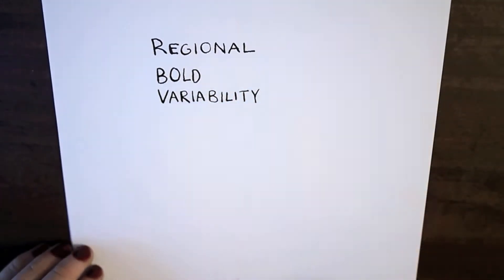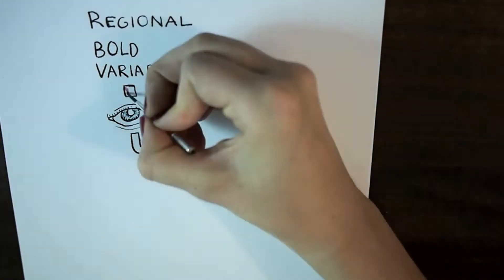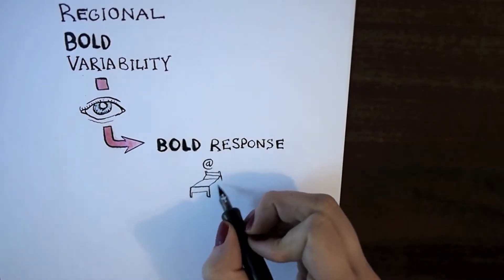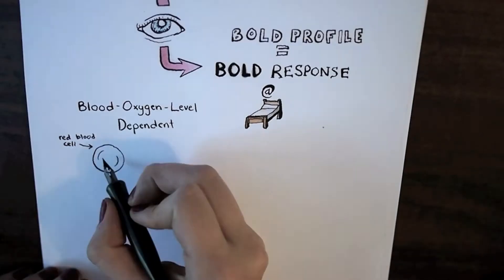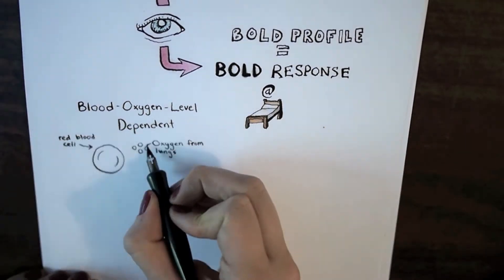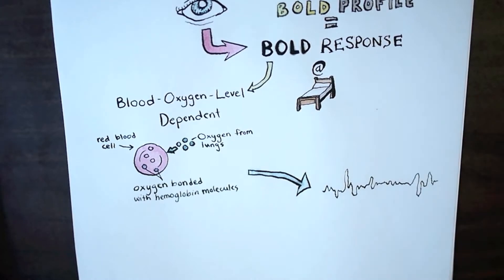The variability in this instance is called regional bold variability and it just looks at how the bold response, not to a stimulus but at resting state, so the bold profile, the blood oxygen level detection signal that we measure in fMRI, how that waxes and wanes over a five or ten minute period.